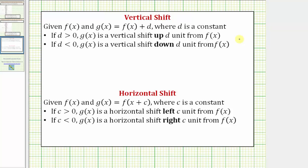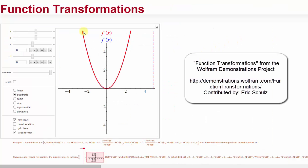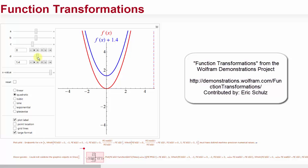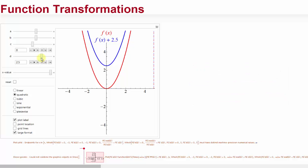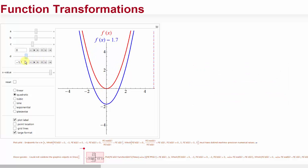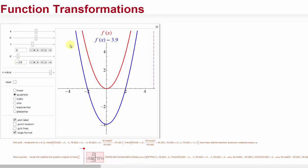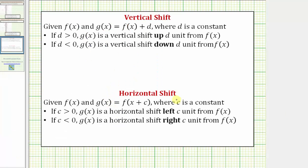Let's verify this with an animation. In red we have the graph of f of x, and notice how if we have f of x plus a constant, the blue graph is shifted up from f of x. And if we have f of x minus a constant, the graph is shifted down from f of x. This verifies the vertical shift caused by the value of d.